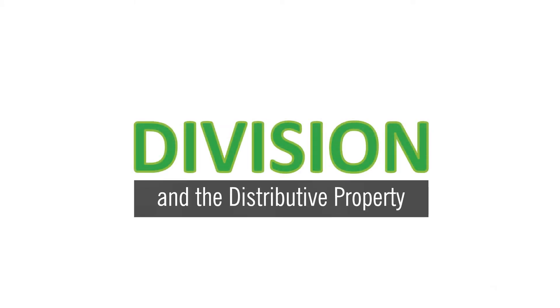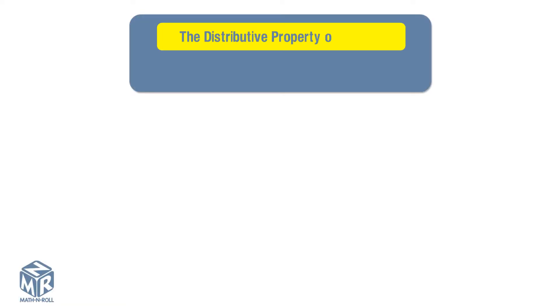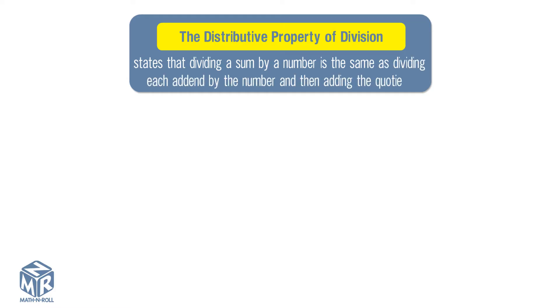Division and the Distributive Property. The distributive property of division states that dividing a sum by a number is the same as dividing each addend by the number and then adding the quotients.